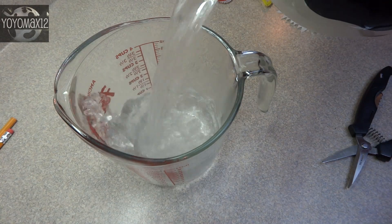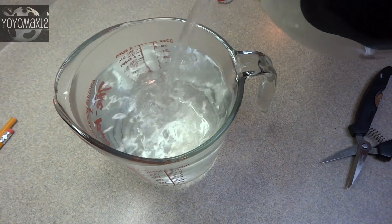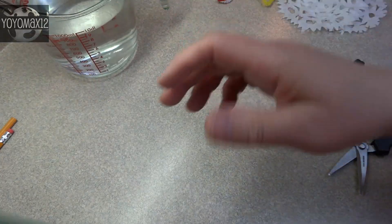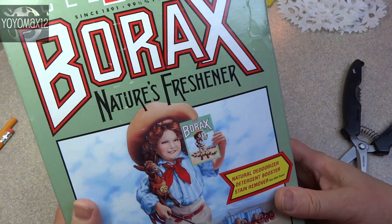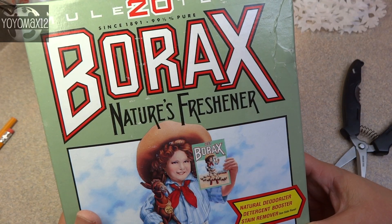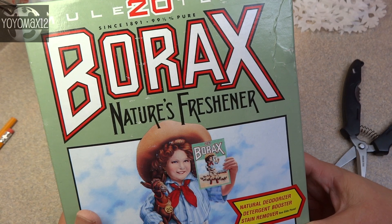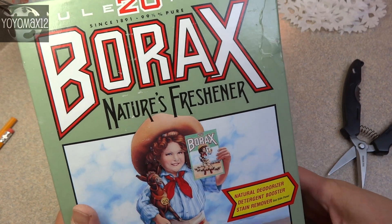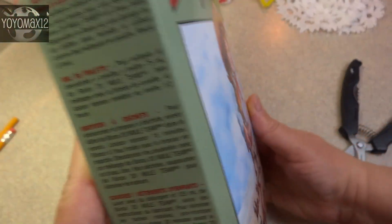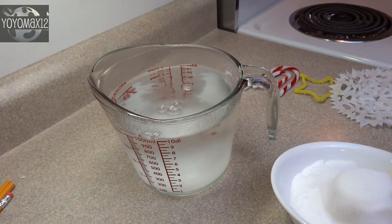The next step is to make the solution of the borax and water that we're going to use to grow the crystals on the objects we just prepared. You need some boiling water and the amount of water you use will depend on how many jars and containers you need to fill. You need some borax. Borax is a mineral. It is sold here in these kinds of boxes under the brand name 20 Mule Team. It is sold in the grocery store next to the laundry detergent and it's used as a natural deodorizer, laundry booster, as a toilet bowl cleaner, it's used as a cleaning agent.